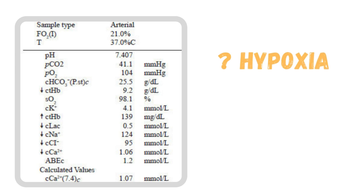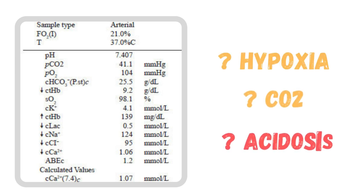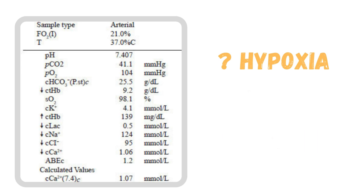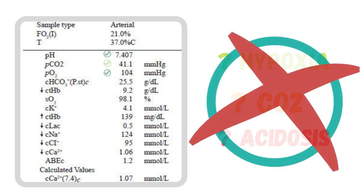First, tell me what this ABG is suggesting. Is there any hypoxia? Is it showing an increased level of CO2? Is there any acidosis? No, no, and no. As we see, pH is within normal limits, CO2 is between 35 to 45, and PaO2 levels are also normal. Hence the ABG report is within normal limits, suggesting no severe respiratory distress.